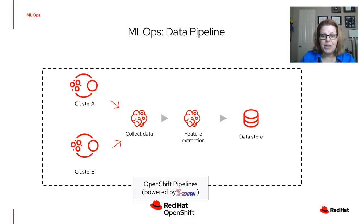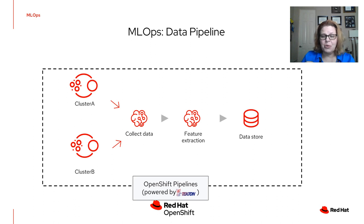In our data pipeline, we're going to have data coming in from a number of resources — clusters or environments. We want to gather or collect that data in a central location where we can then do feature extraction for our models, and put the data within a data store so it's readily accessible by our data engineers and data scientists.